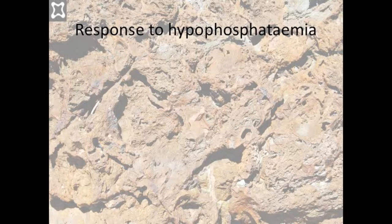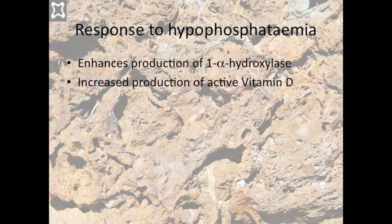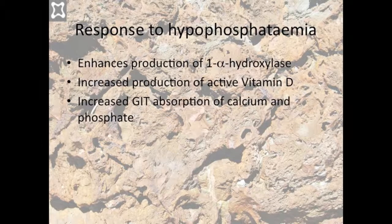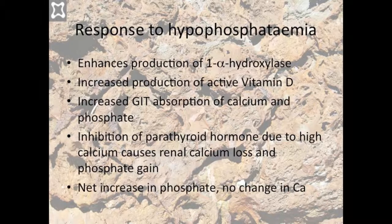Hypophosphatemia stimulates renal tubular production of 1-alpha hydroxylase. This enhances the conversion of vitamin D to the active dihydroxy form, which stimulates gastrointestinal absorption of calcium and phosphate. However, the increase in calcium results in inhibition of parathyroid hormone, resulting in renal loss of calcium and retention of phosphate. The net effect is to increase phosphate and have no change in calcium.